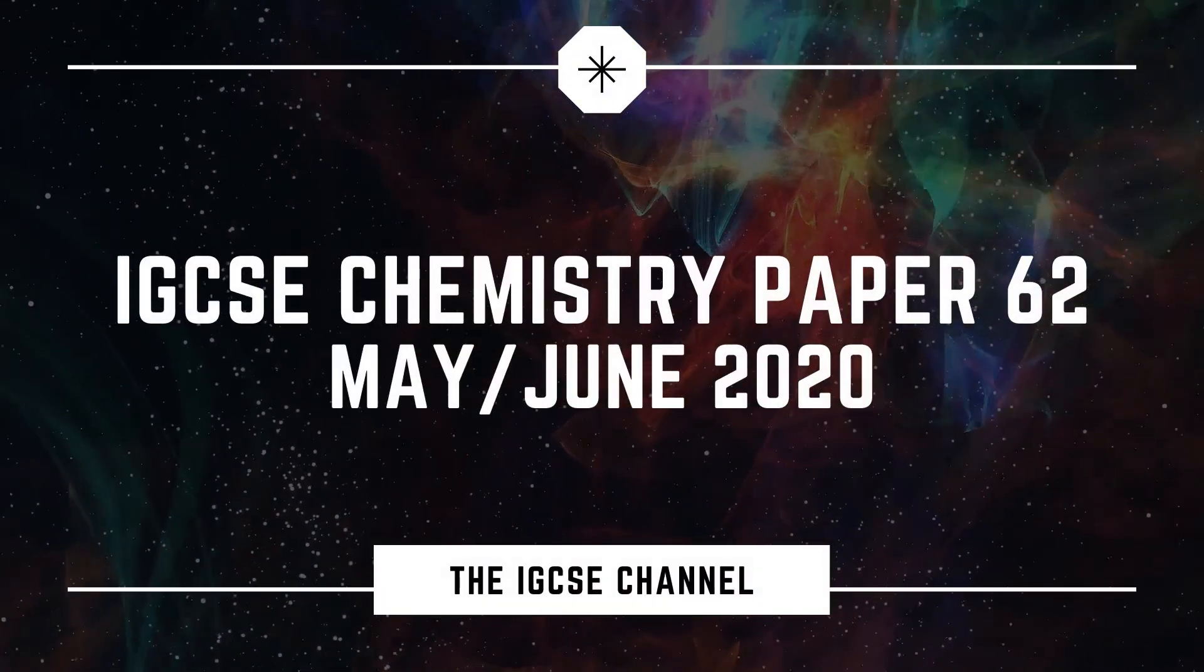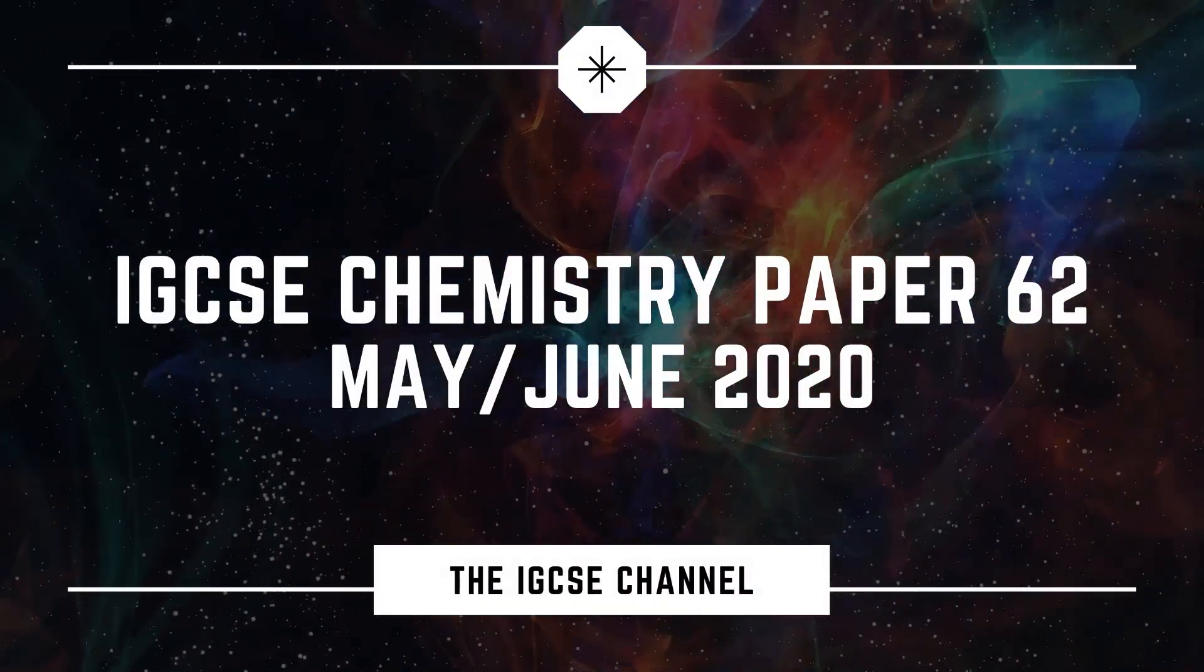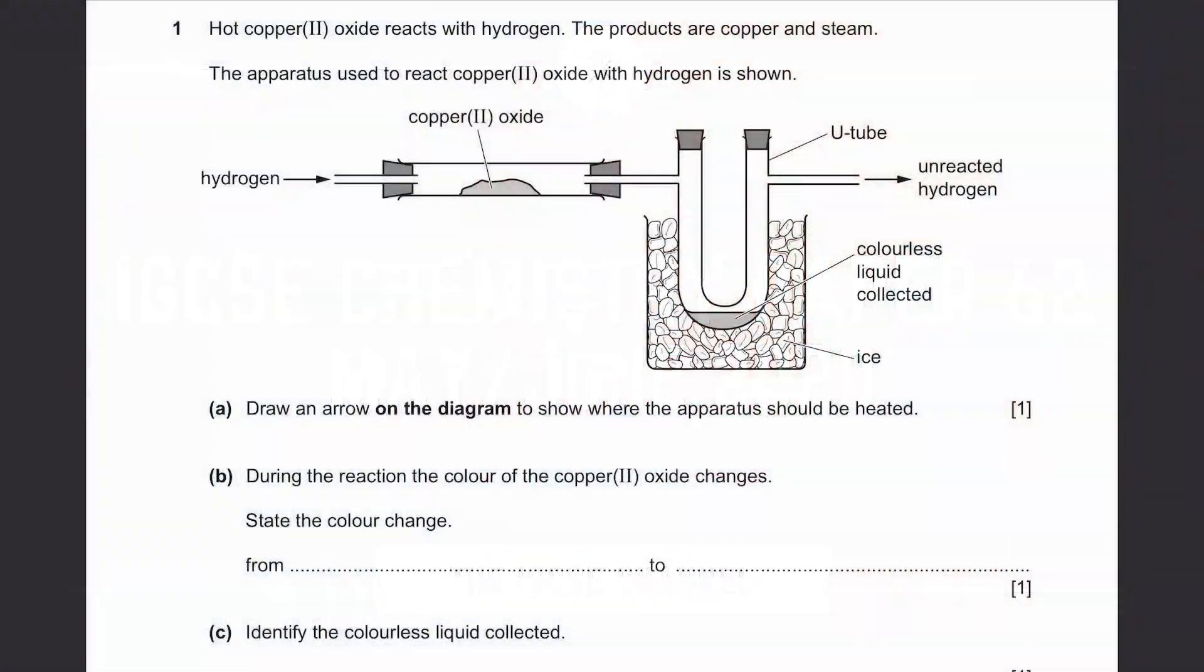Cambridge IGCSE Chemistry Made in 2020, Paper 62. Question 1: How copper(II) oxide reacts with hydrogen? The products are copper and steam. The apparatus used to react copper(II) oxide with hydrogen is shown. We have copper(II) oxide, hydrogen as the reactants and these should be the products.